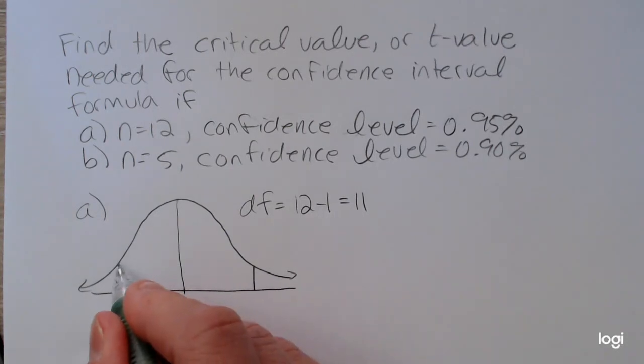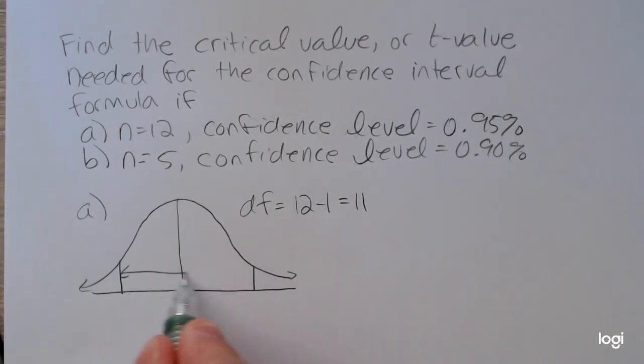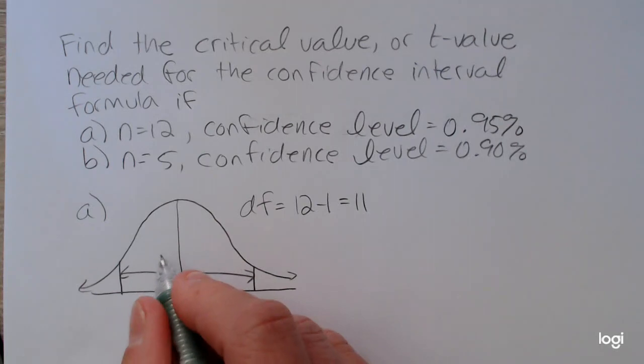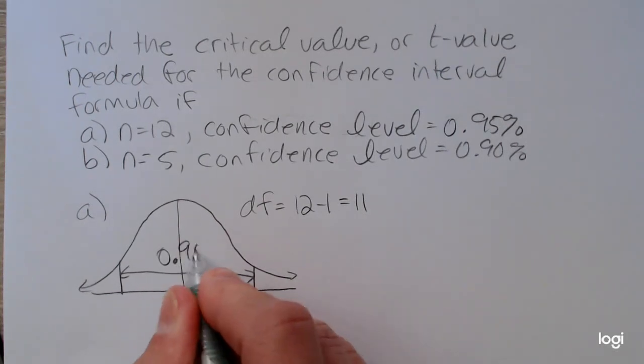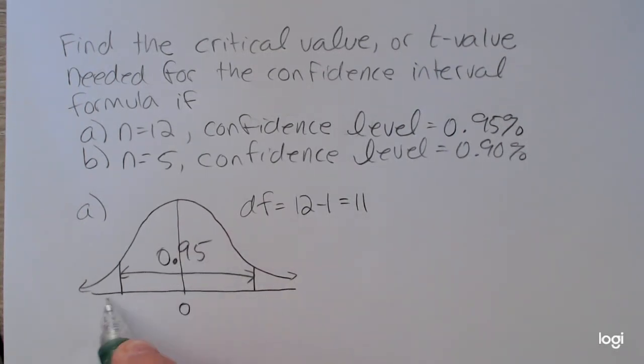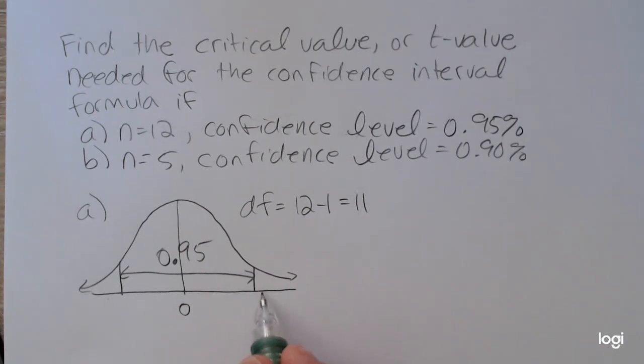And if I have a level of confidence of 0.95, that means I have 95% or 0.95 amount of area between two symmetric t values. And the one you need for the formula, if you choose to do this by hand, is this upper one.